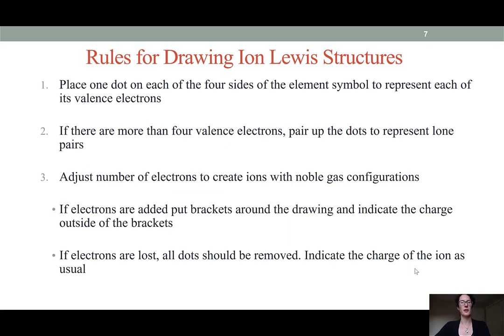Here we'll summarize the rules behind drawing ions as Lewis structures. Begin by placing one dot at each of the four sides of the element symbol for each of the valence electrons that that element has. If you have more than four valence electrons, then we're going to pair up the dots at the four sides, and these will represent our lone pairs. That will bring us to the elemental Lewis structure. Now we're going to adjust it to make an ion, and we'll do that adjustment by either removing the dots to create a cation or adding electrons to form an anion. If the electrons are added, we need to put brackets around our Lewis structure with all of the dots present and indicate the charge outside of the brackets. Whereas if we are removing electrons, we would simply erase those dots and indicate the charge as usual.